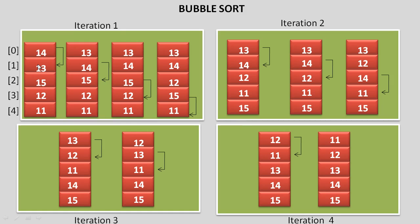Earlier the values were in random order: 14, 13, 15, 12, and 11. After applying the bubble sort methodology, we find the values arranged in numerical order: 11, 12, 13, 14, 15. So first we need four iterations to get the final results.